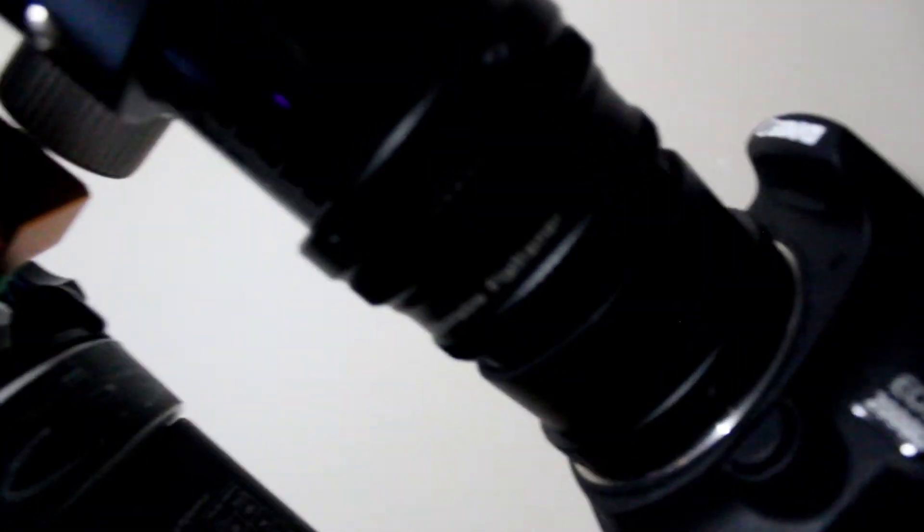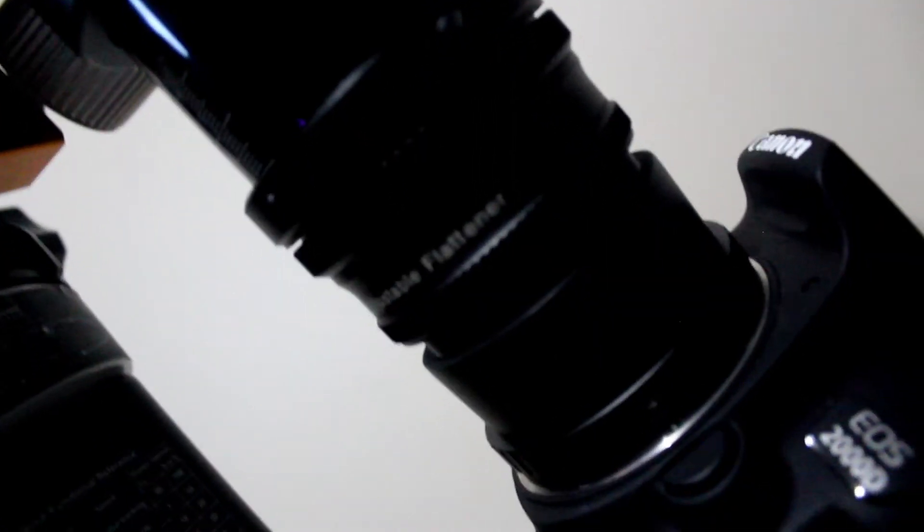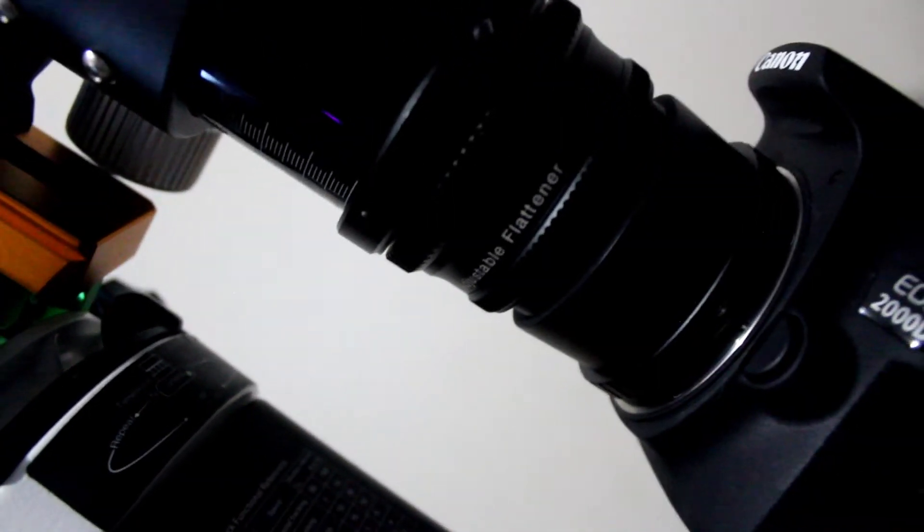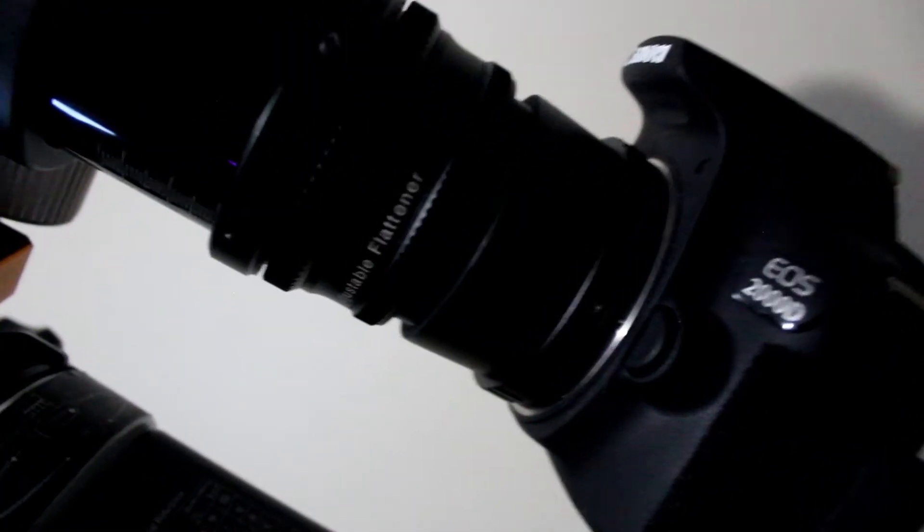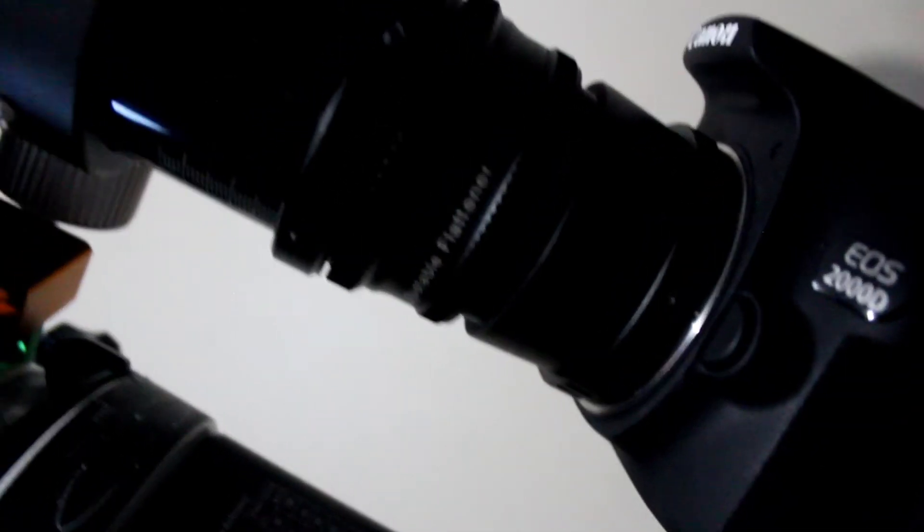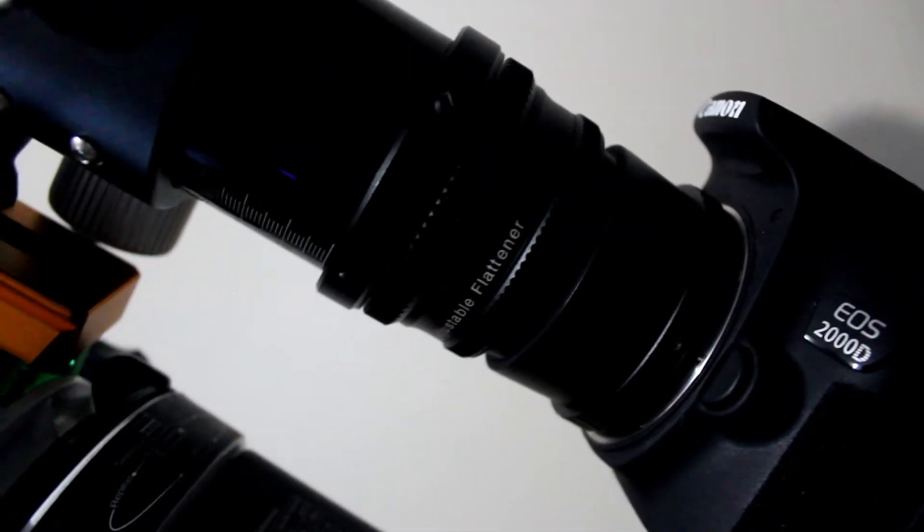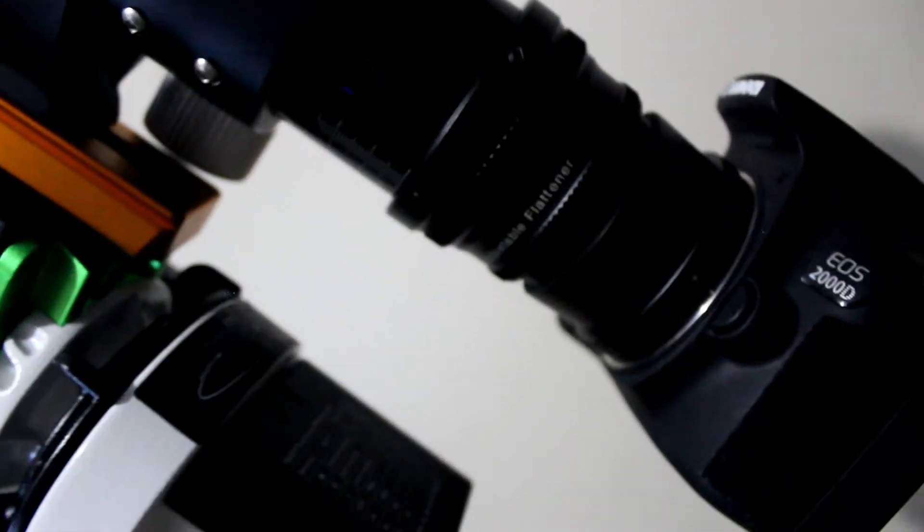Anyway, here's the flattener. The field flattener. The Flat 61. It did not come with the scope. I had to buy it individually. It cost about 200 bucks. Kind of annoying, but you know, whatever. Does the job. Can't complain.